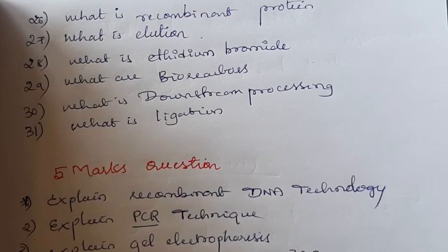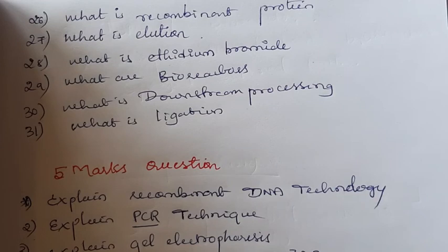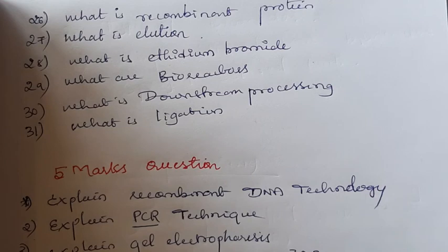What are bioreactors? Bioreactors are large-scale vessels which are useful for large-scale production of genetically modified products. They provide the optimum condition for the growth of bacteria. Finally, we can get a large-scale product from the bioreactor. It is an automated machine that provides optimum temperature, pH, food, or culture within the bioreactor.